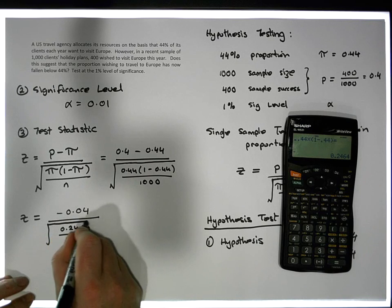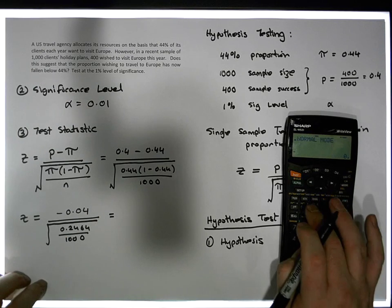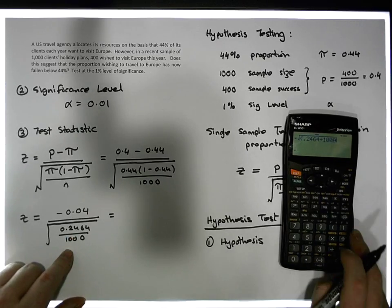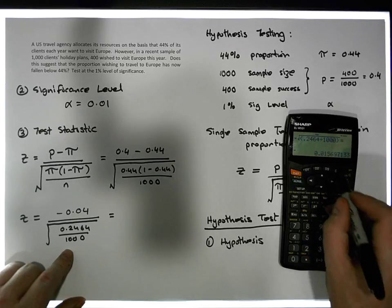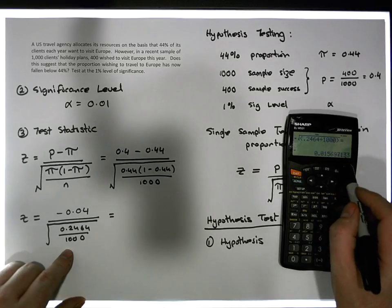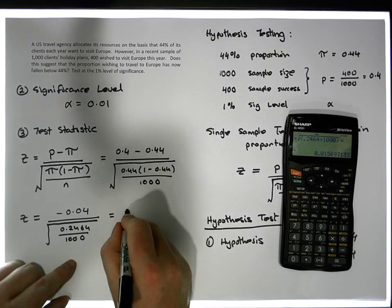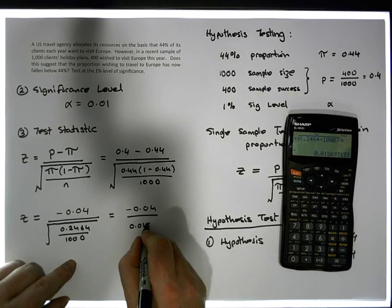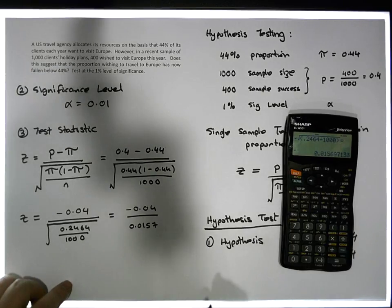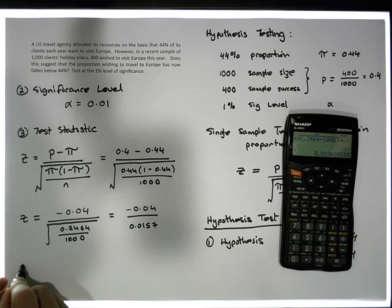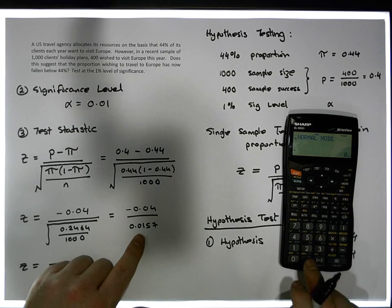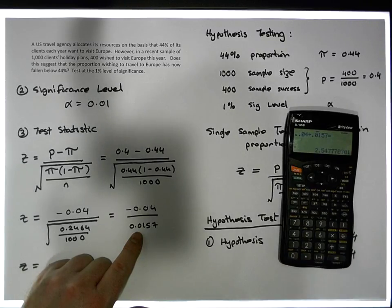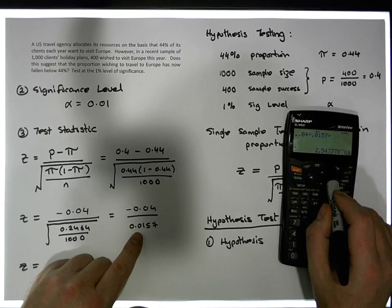Taking the square root of 0.2464 divided by 1000 gives 0.0157 to four decimal places. So we have minus 0.04 divided by 0.0157, which gives a test statistic of 2.548 to three decimal places.